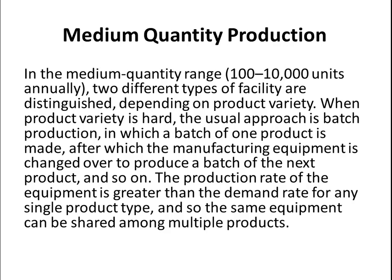When product variety is high, the usual approach is batch production, in which a batch of one product is made. After which the manufacturing equipment is changed over to produce a batch of the next product and so on. The production rate of the equipment is greater than the demand rate for any single product type, and so the same equipment can be shared among multiple products.